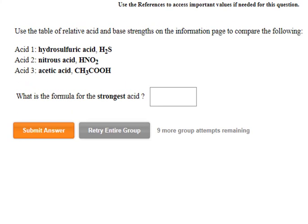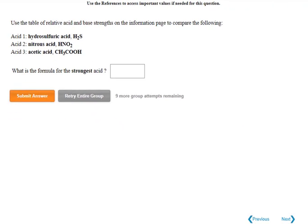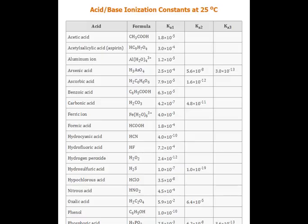In the next set of problems, we are asked to compare the relative strengths of acids and bases. To do this, we need a table of Ka values and Kb values, such as this one.